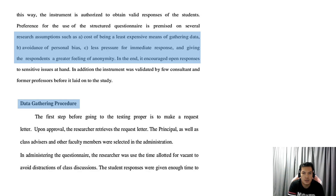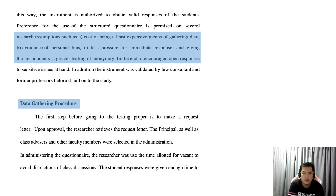On the data-gathering procedure, the first step before going to the testing proper is to make a request letter. Upon approval, the researcher retrieves the request letter. The principal as well as the class advisors and other faculty members were involved in the administration. In administering the questionnaire, the researcher used the time allotted for vacant periods to avoid distraction from class discussion. The students' responses were given enough time.